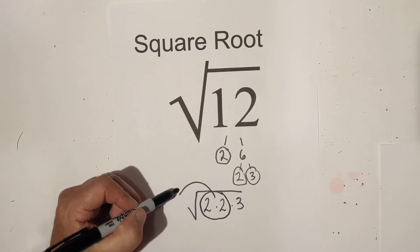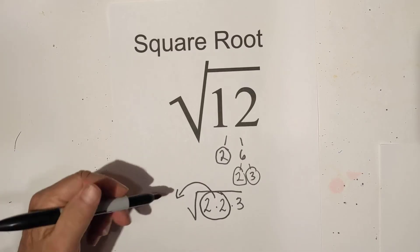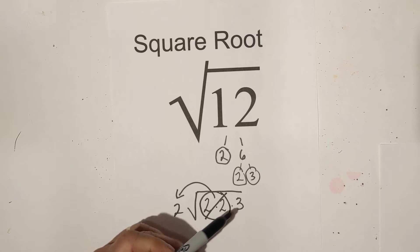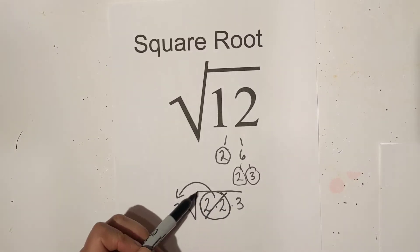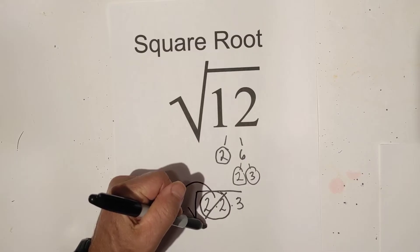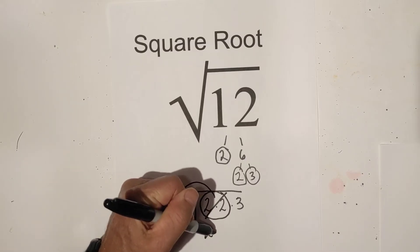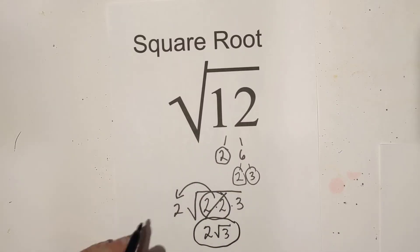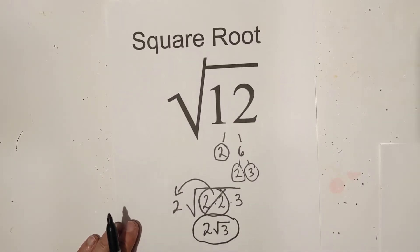So I'm going to pull them out from under the radical sign. So I have a two. So I can cross them out. And all you have left under the square root sign is the three. So I can rewrite it as two square root three. So there is twelve simplified is two square root three.